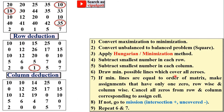The next step is to draw the minimum possible lines to cover all zeros. First draw the horizontal or vertical line having the maximum number of zeros. After drawing the lines, the minimum possible lines covering all zeros is 4. Since the minimum lines are not equal to the order of the matrix (which is 5), you have to proceed to the next iteration.